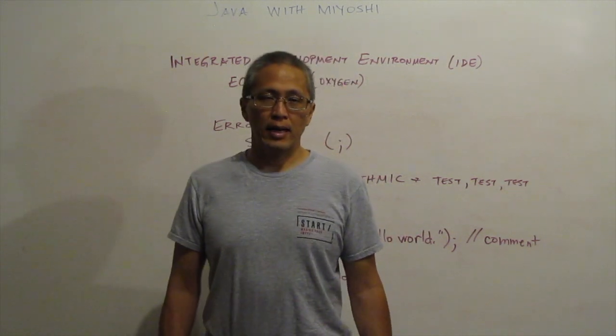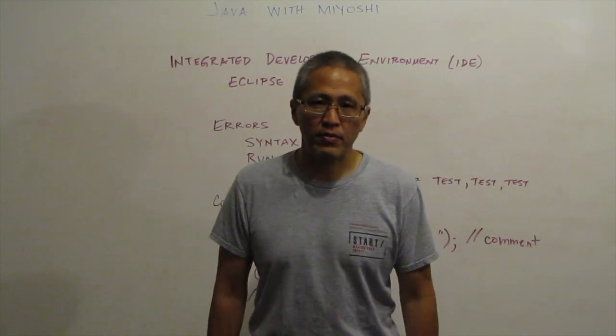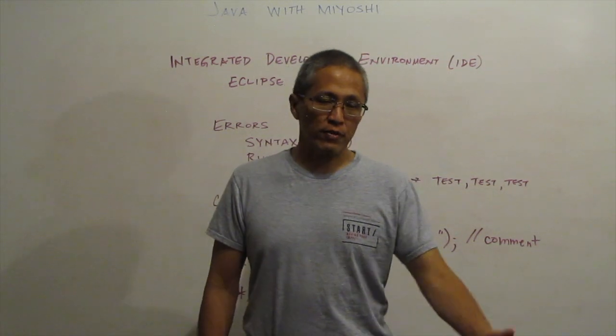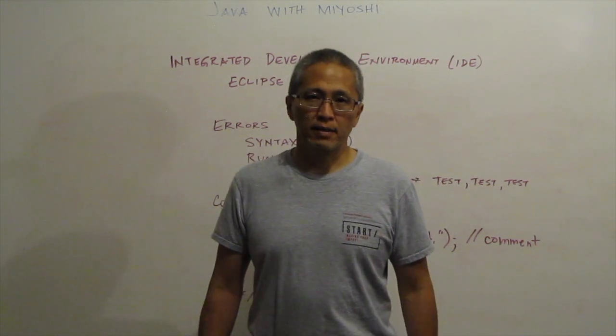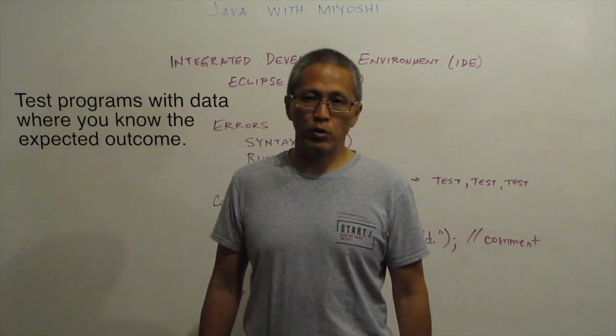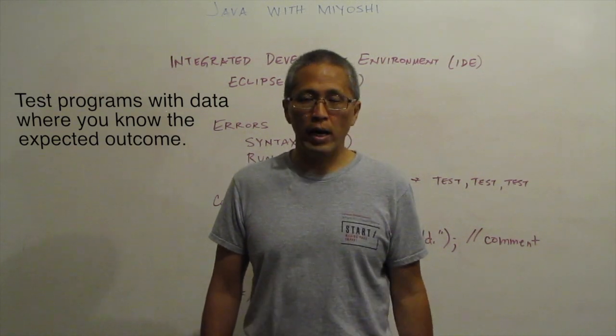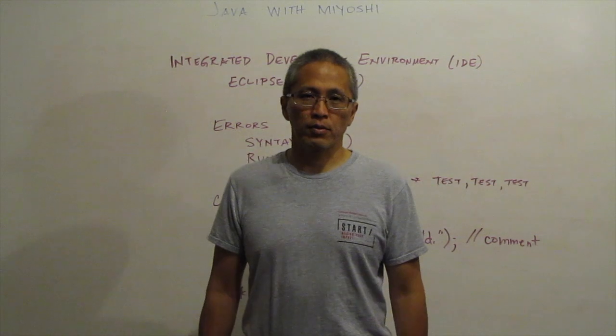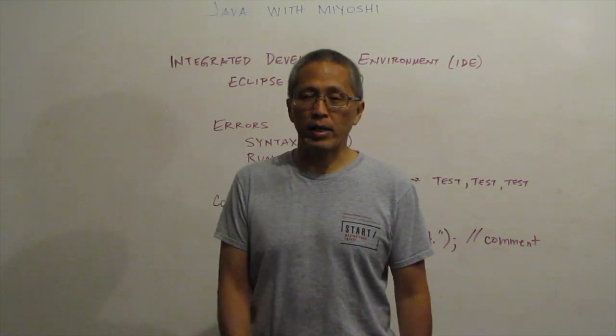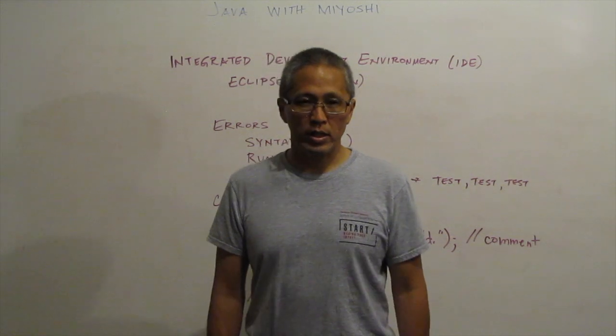One example I would give you for testing is if you have a trigonometric function, for instance, and you have to use sine and cosine. If you put in values that you know, for instance, the sine of zero degrees is zero, the cosine of zero degrees is one. If you know those kind of things, you can write test cases and test your program and make sure it does what you need to.